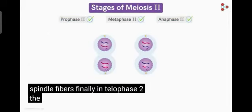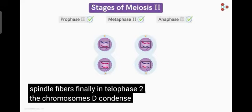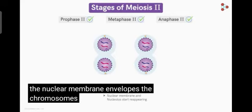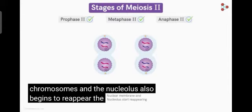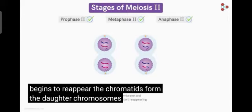Finally, in telophase II, the chromosomes decondense. The nuclear membrane envelopes the chromosomes and the nucleolus also begins to reappear. The chromatids form the daughter chromosomes at both the poles.